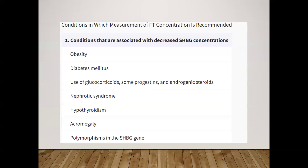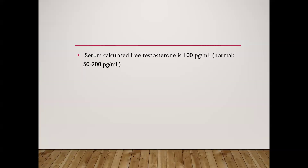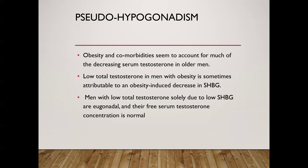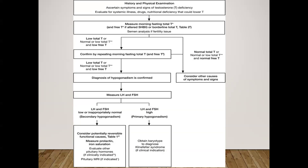In this patient, the calculated free testosterone was 100 pg/mL, within the normal range of 50–200 pg/mL. So we have an obese male with low SHBG, low total testosterone, but normal free testosterone — this is referred to as pseudo-hypogonadism or functional hypogonadism. As noted in the recent Lancet review, low testosterone in obese men is largely attributable to decreased SHBG; men with low total testosterone solely due to low SHBG are eugonadal, with normal free testosterone.